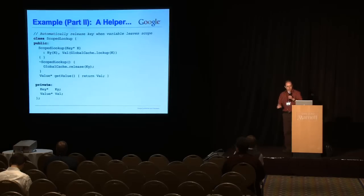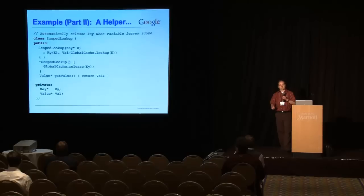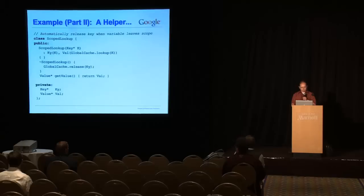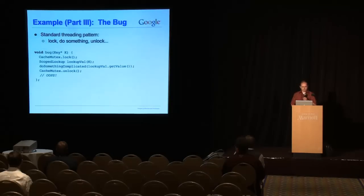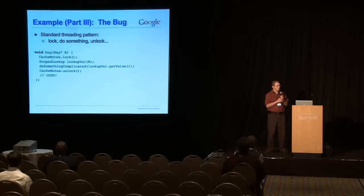And then we defined a global cache, which is protected by mutex. Secondly, we write a helper class to handle the pinning and unpinning for us, so that it pins it in the constructor and releases it in the destructor. So far, so good. And here's the bug. Now, show of hands here, how many people look at this code and immediately see the bug?